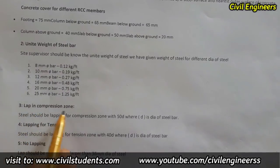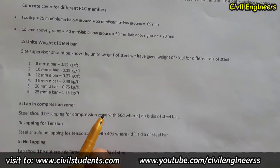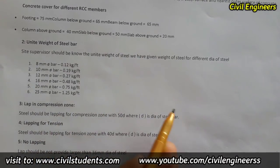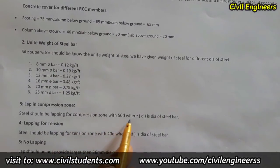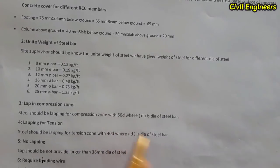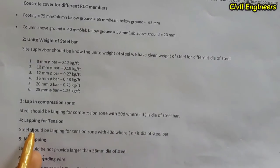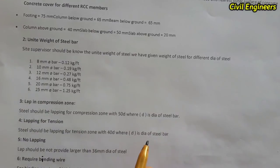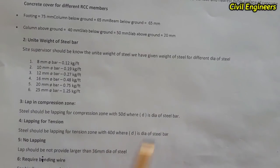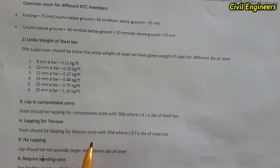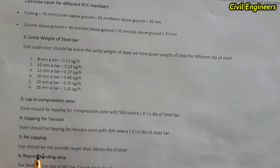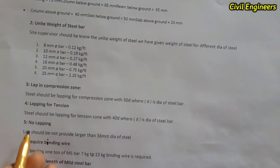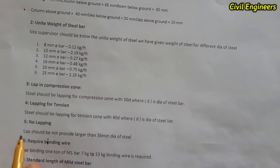The third term is lap length. For compression zone, steel should be lapped with 50d, where d is the diameter of steel and 50 is the constant. For tension zone — such as beams — steel should be lapped with 40d, where d is the diameter of steel.